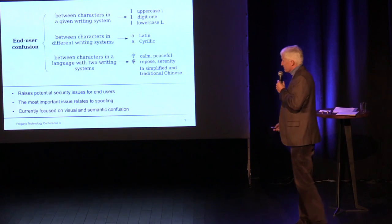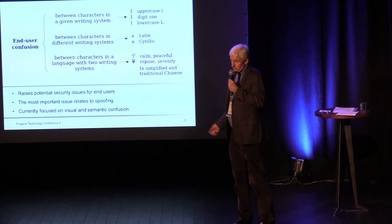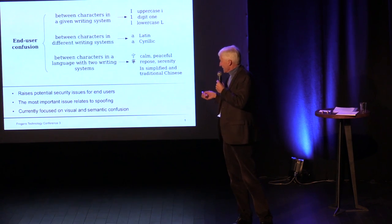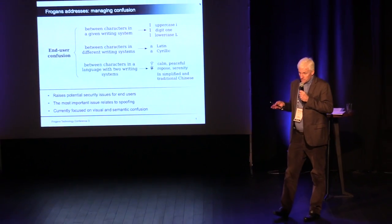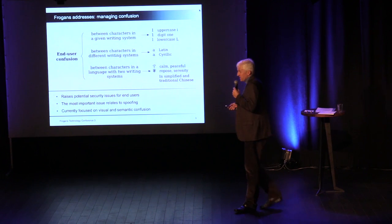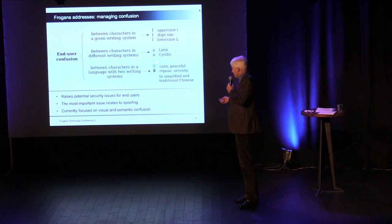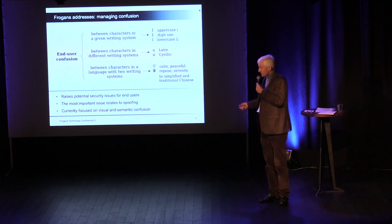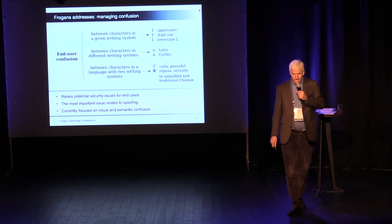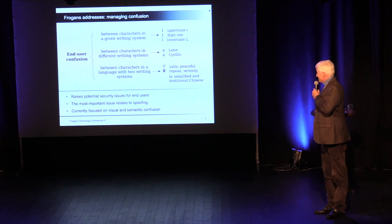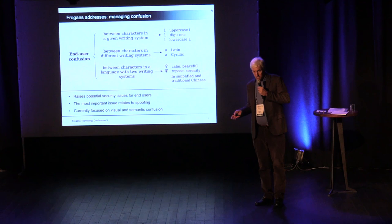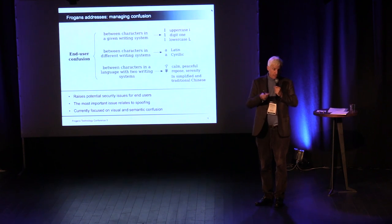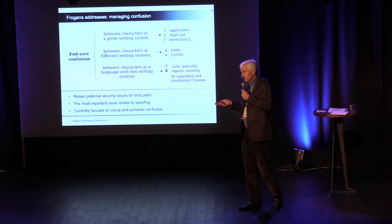Finally, there's a third type of confusion concerning characters in a language with more than one writing system. For example, in Chinese, there are traditional Chinese and simplified Chinese. The same two characters may basically mean the same thing, and for a Chinese person they would think they're talking about the same word — so that's another possibility of confusion.